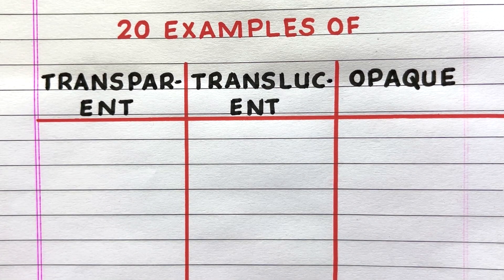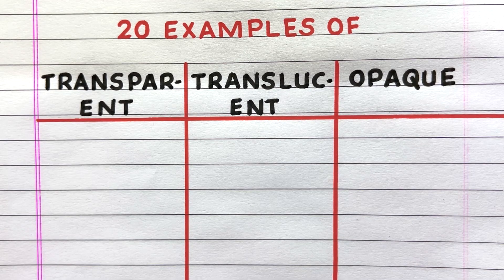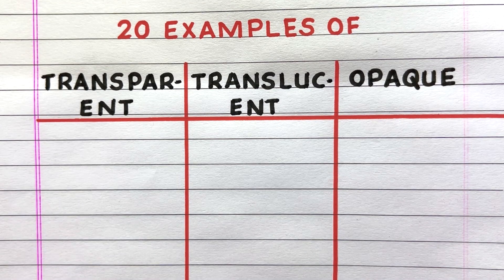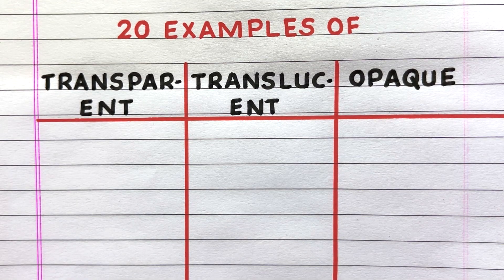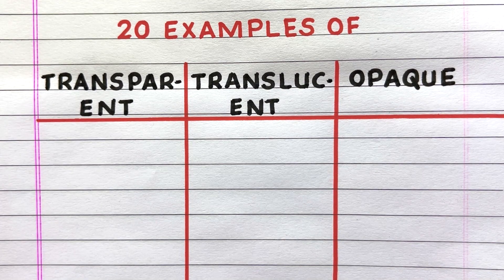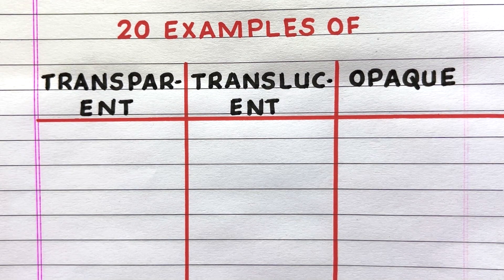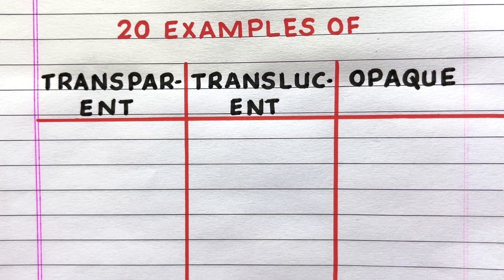Hello everyone, welcome to my channel. In this video I'll write 20 examples of transparent, translucent, and opaque objects. Let's get started.